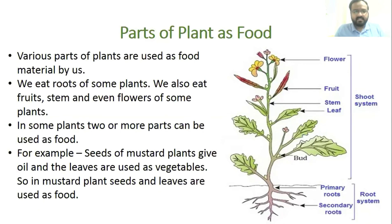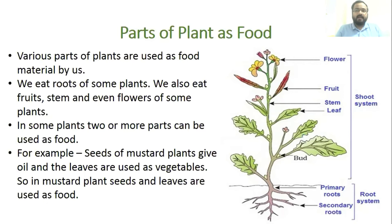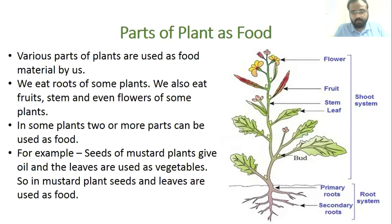For example, seeds of mustard plants give us oil and the leaves are used as vegetables. So in the mustard plant, both seeds and leaves are consumed as food — two parts of the same plant are edible.